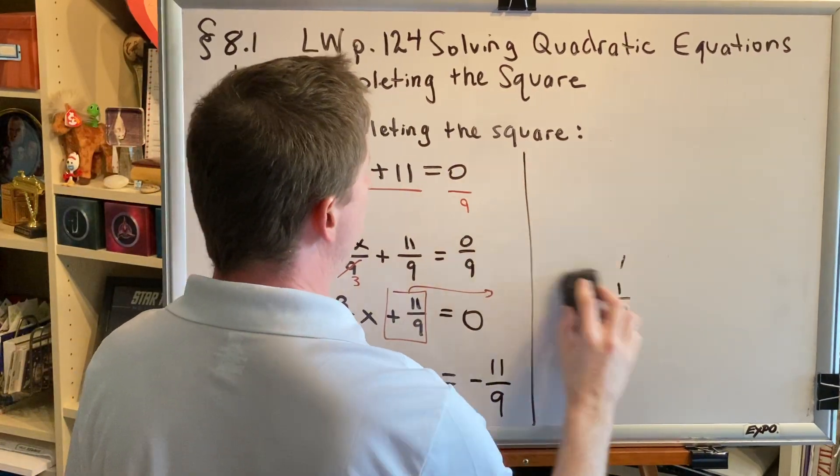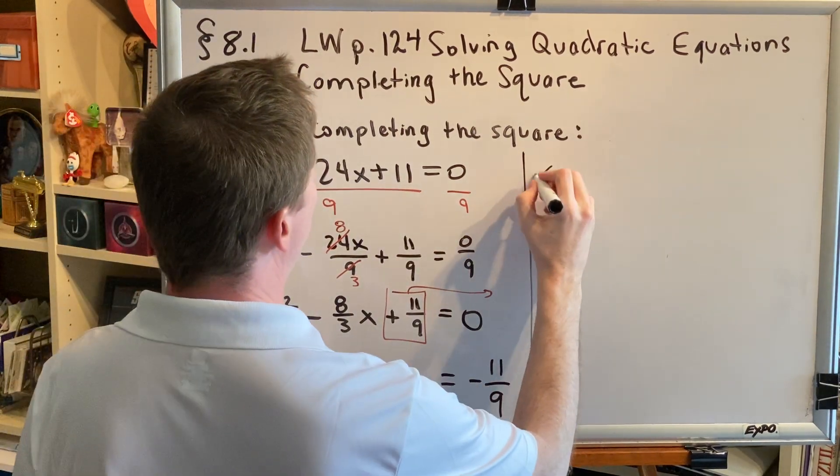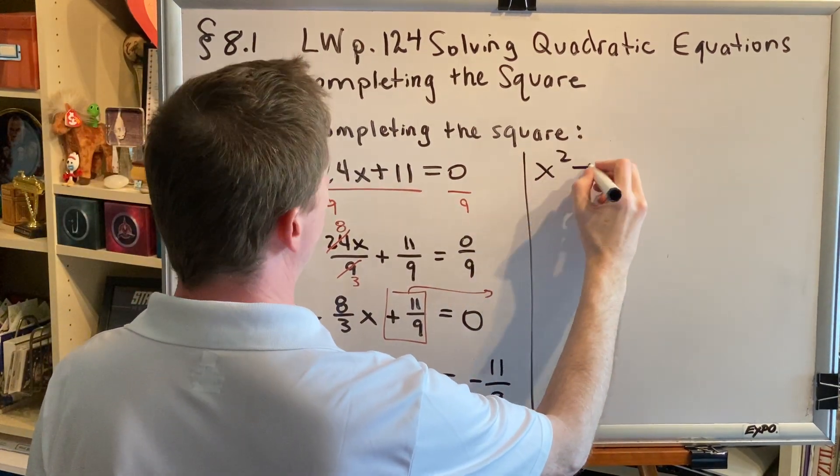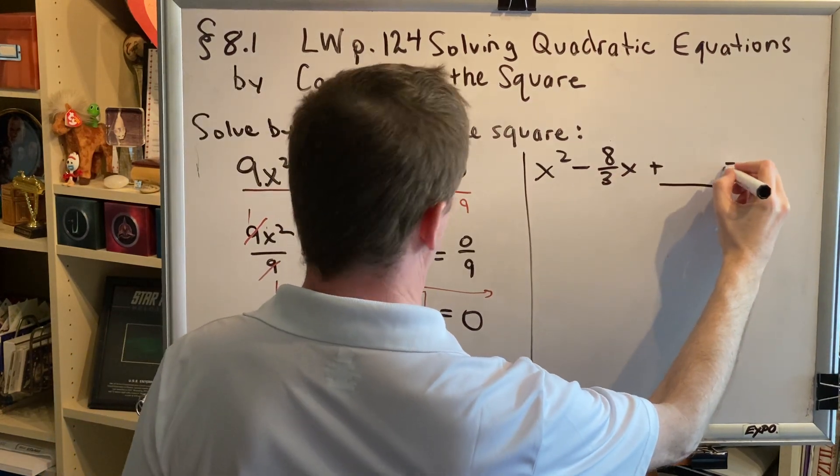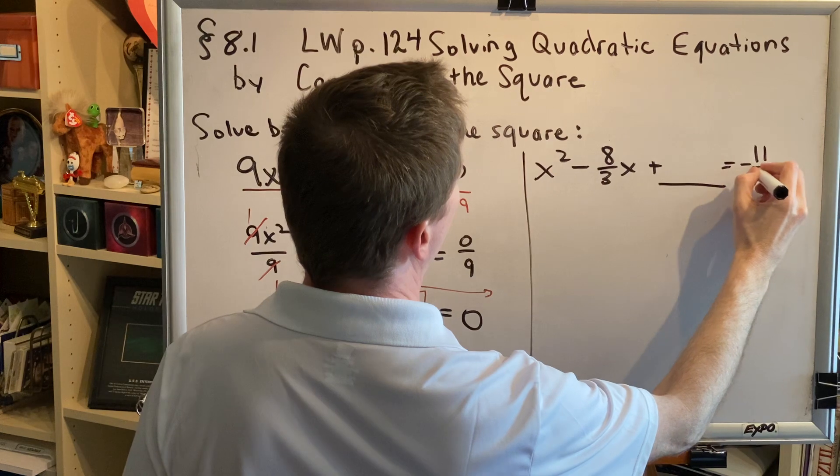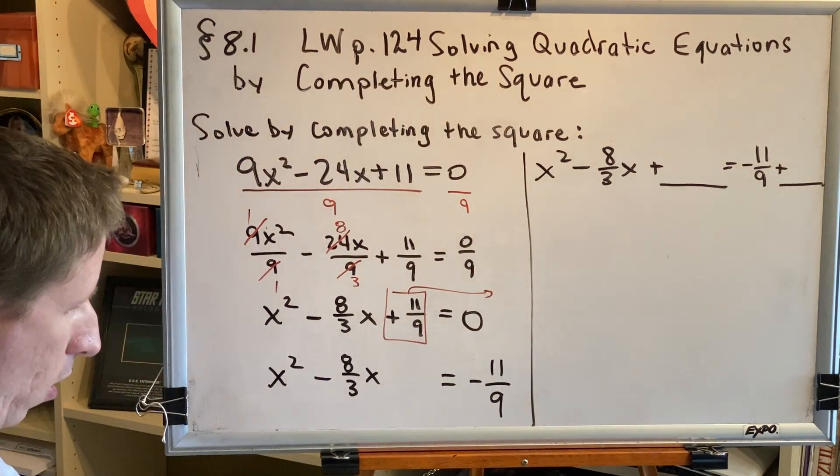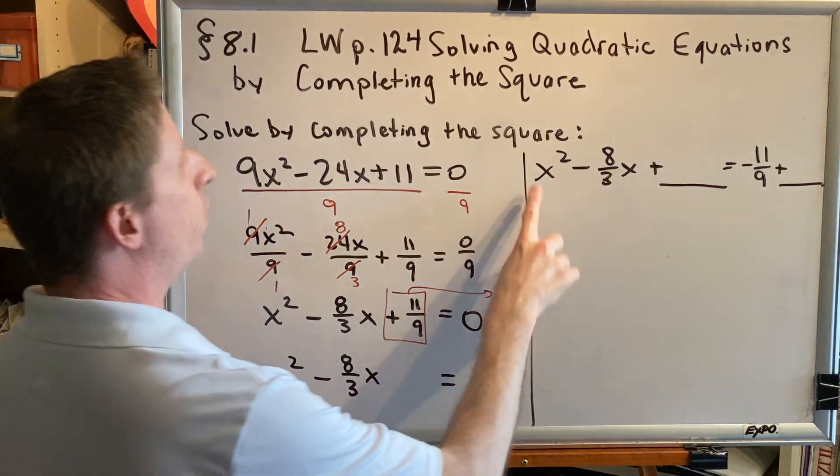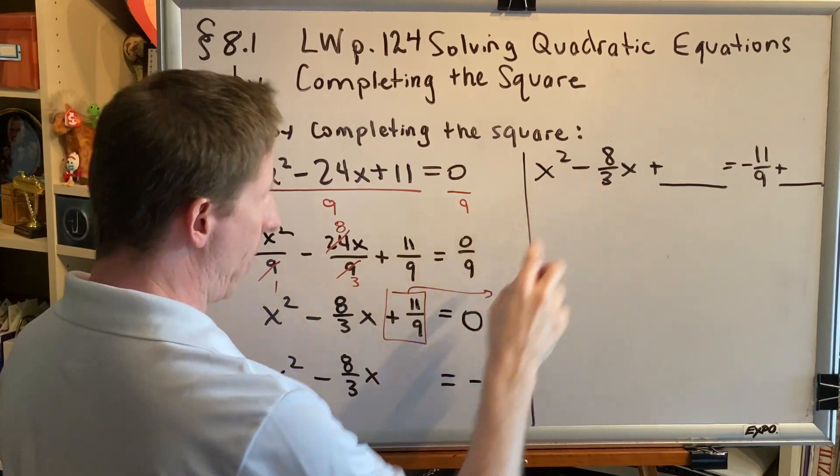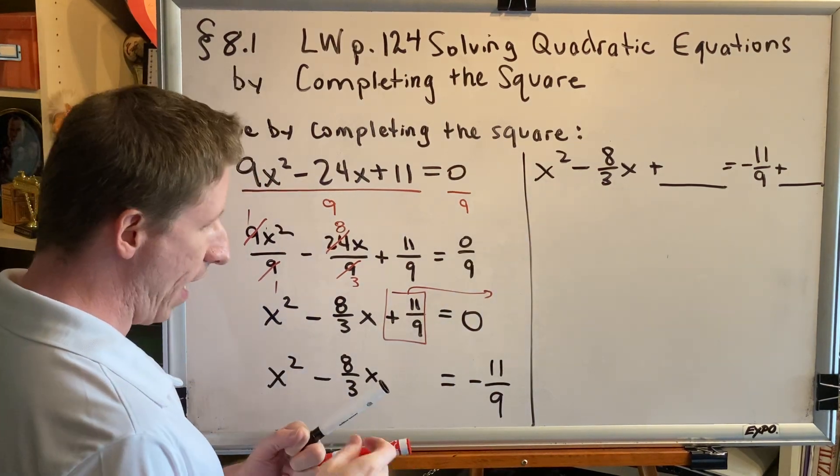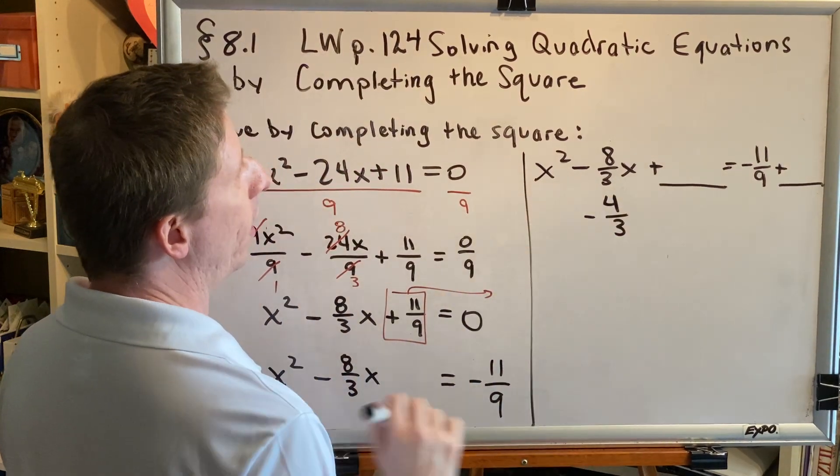So now that we understand that, let's continue solving this problem. I'm going to write our last line here at the top of this column. And our job is to fill in the blanks. Okay, so here we go. First, verify the variable squared coefficient is 1. It is. Second, take this and cut it in half. Well, half of negative 8 thirds would be negative 4 thirds. Next, square it.